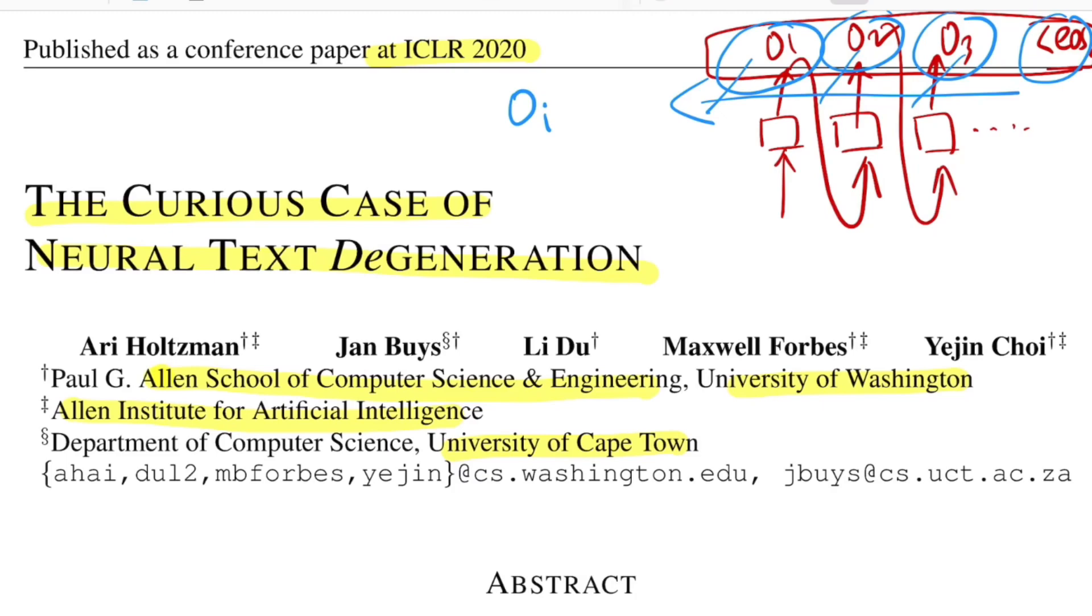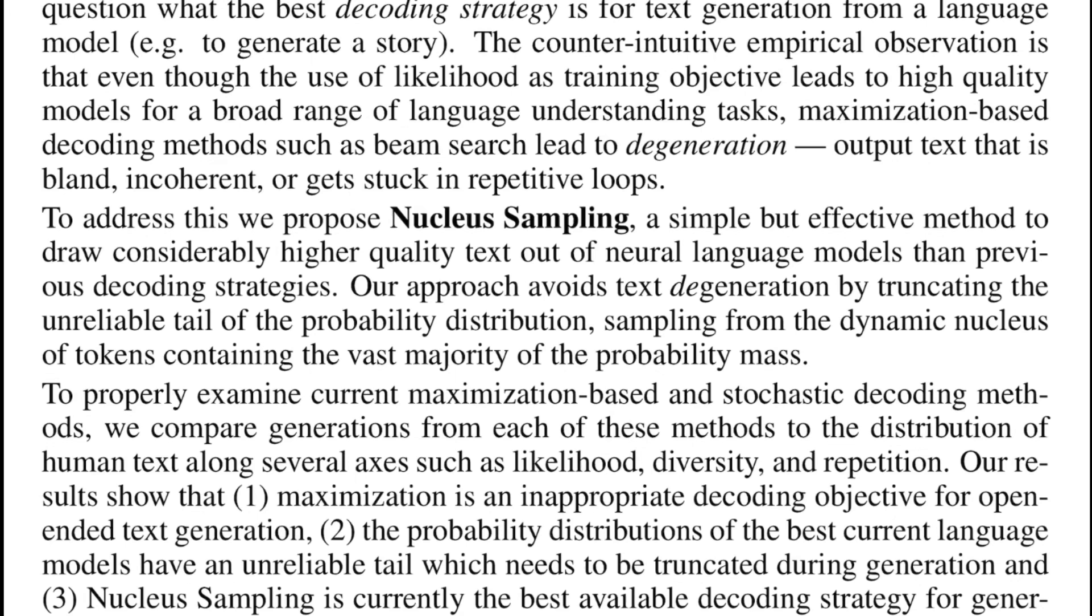Let's start with the abstract. As they say, we propose nucleus sampling, which is an effective method for generating considerably higher quality of text.